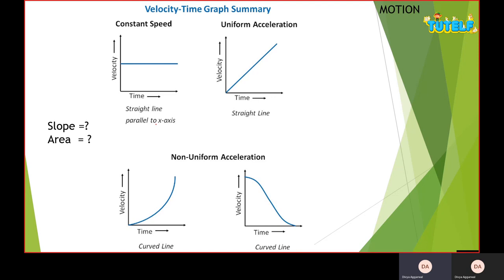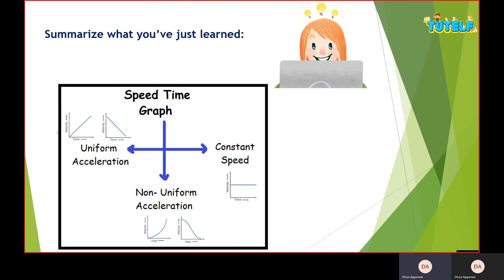To summarize: if I have a straight line parallel to the x-axis, it's a constant velocity graph — the object is moving at constant speed. If I have an oblique straight line, it's a uniform acceleration graph. For non-uniform acceleration, the graph could be a curved line rising or falling, or a random zigzag. The slope of a velocity-time graph gives acceleration, and the area under it gives displacement.